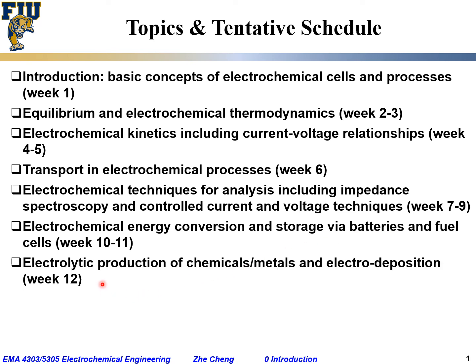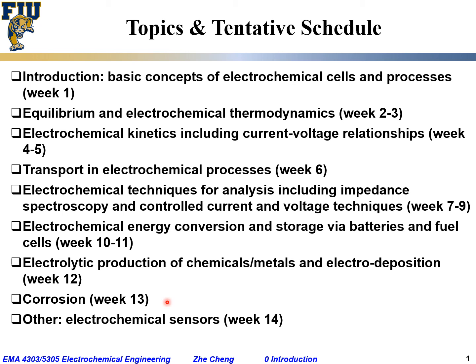Week twelve will cover electrolytic production of chemicals and metals, and electrodeposition — converting electricity back into chemicals or metals such as hydrogen gas, chlorine gas, or copper. Week thirteen will briefly cover corrosion, since a separate dedicated course covers it in depth. Finally, if time permits, we'll cover electrochemical sensors such as glucose sensors.